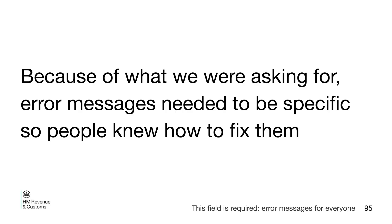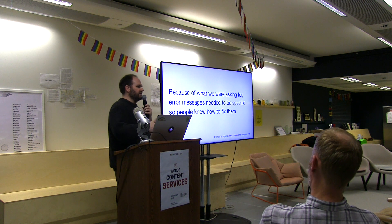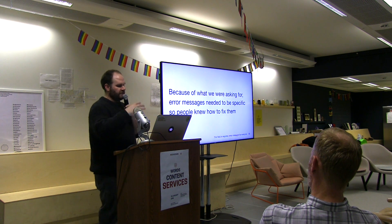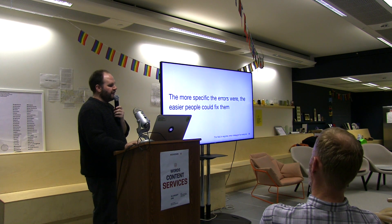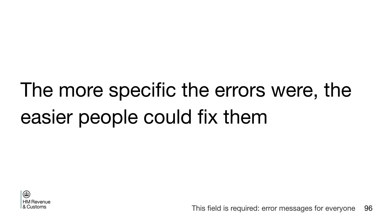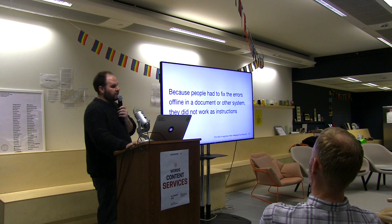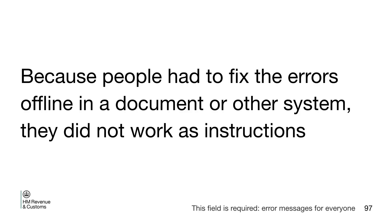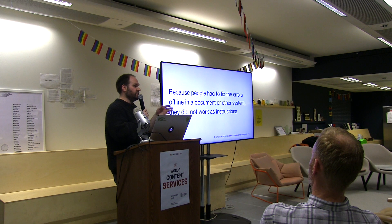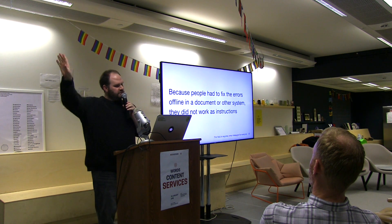Because of what we were asking for, the error message needed to be mega specific — things like, 'because you haven't given us a national insurance number, you must give us your gender or date of birth.' So there were lots of very verbose error messages. But we found the more specific they were, the easier people could fix the problems. And one of the key things we found was that, because they had to fix them in an offline process, turning them into instructions never worked — 'see end of such and such.' Everyone went looking for somebody to enter it; they didn't realise they had to go and do it elsewhere.